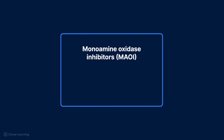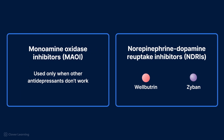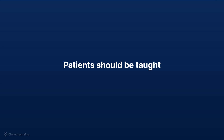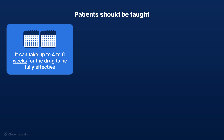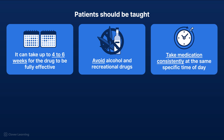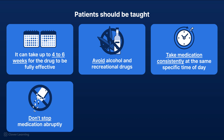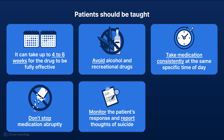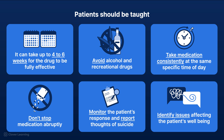Monoamine oxidase inhibitors, or MAOIs, are another category of antidepressants used only when other antidepressants don't work, due to side effects, dietary restrictions, and safety concerns. Wellbutrin and Zyban, which are norepinephrine-dopamine reuptake inhibitors, or NDRIs, are other antidepressants that may be used to treat depression. Patients should be taught that they may start feeling better in a couple of weeks, but it can take up to four to six weeks for the drug to be fully effective. Avoid alcohol and recreational drugs, take medication consistently at the same time each day, and don't stop medication abruptly. Monitor closely for thoughts of suicide, and consider that psychotherapy combined with medication often works best.